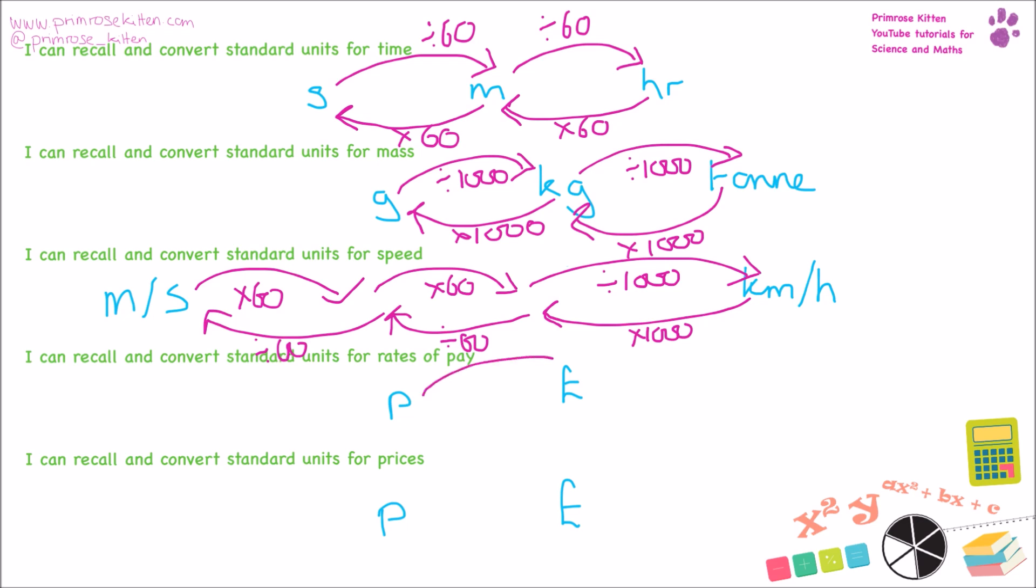If we want to go from pence into pounds, there are a hundred pence in a pound, so we need to divide by a hundred. To go the other way, we need to times by a hundred. And it is the same for prices.